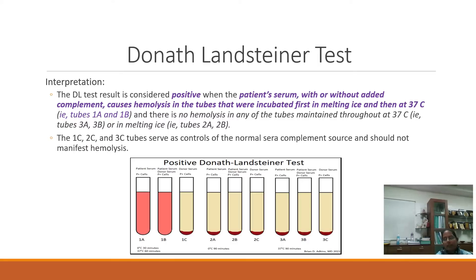The DL test result is considered positive when the patient's serum, with or without added complement, causes hemolysis in tubes that were incubated first in the melting ice bath and then at 37 degrees Celsius — that is tubes 1a and 1b. Tube 1a has patient serum with its own complement; tube 1b has supplemental pooled normal sera. There should be no hemolysis in tubes maintained throughout at 37 degrees Celsius (Set 3) or in melting ice bath throughout (Set 2). Tubes 1c, 2c, and 3c serve as controls and should not show hemolysis.